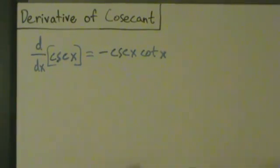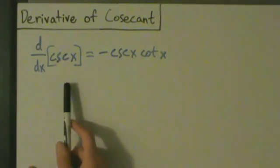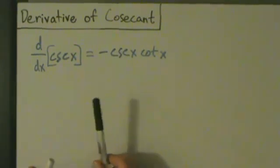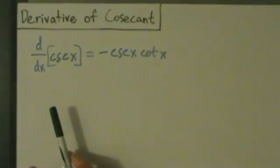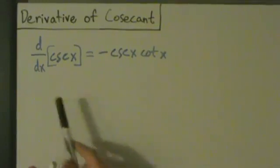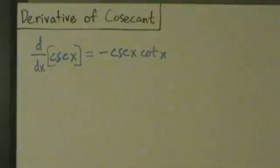So in the last video, we did secant, and we see there's kind of analogous, right? Remember, the derivative of secant was secant tangent, and the derivative of cosecant is negative cosecant cotangent.